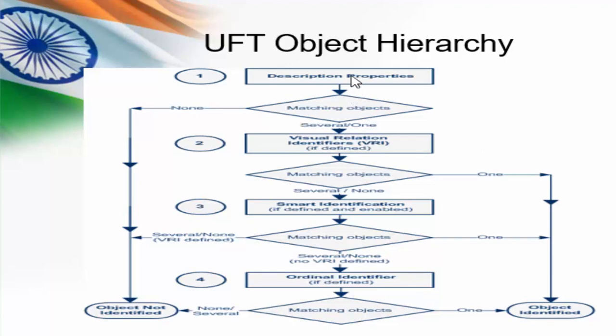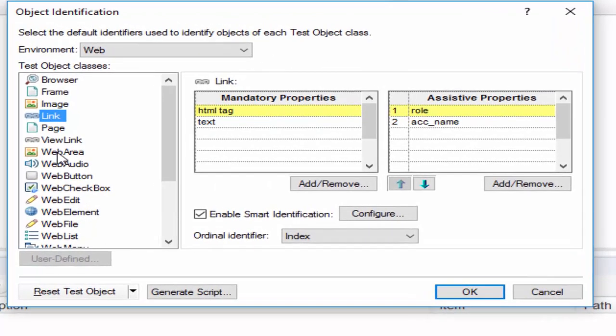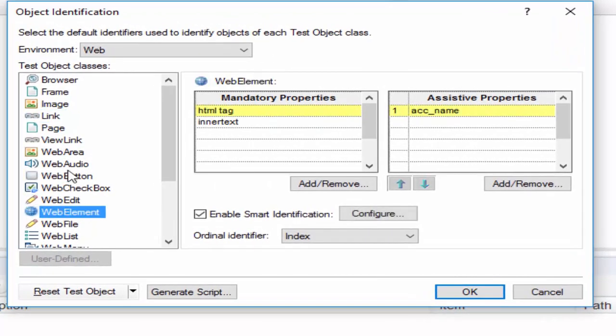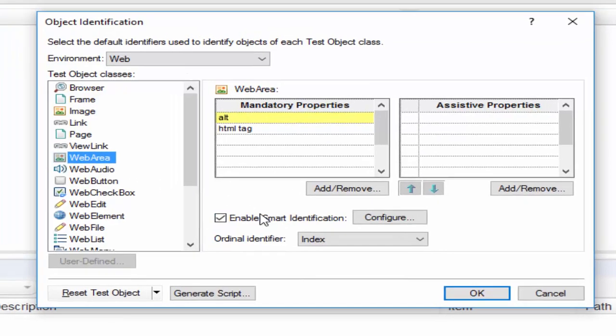From this you can understand how important the object identification mechanism is in UFT. About 90% of our aim is to exactly find the object. Once we can find the object, performing the action is very easy. With the object identification settings, we can define smart identification for each class.